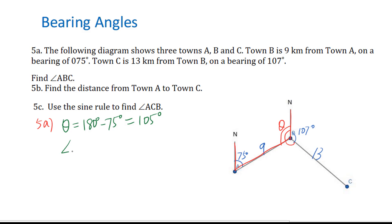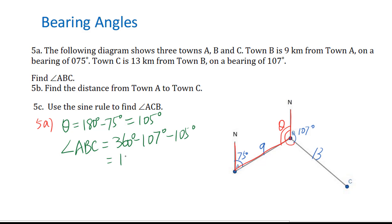Then angle ABC equals 360 degrees minus 107 degrees minus 105 degrees, so you will get 148 degrees.